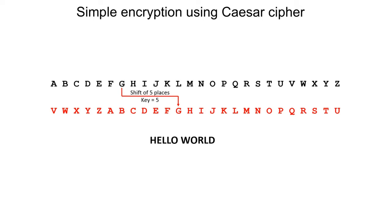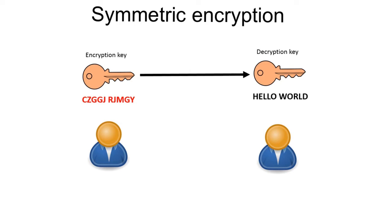Now let's take a look at two of the major types of encryption. The first is symmetric encryption. With symmetric encryption, the same key is used to encrypt the message and to decrypt it. With this method, both parties need to know the key and they need to make sure the key is kept secret. The key can be used many times, or it could be uniquely generated for each transaction in an attempt to make it harder to crack.